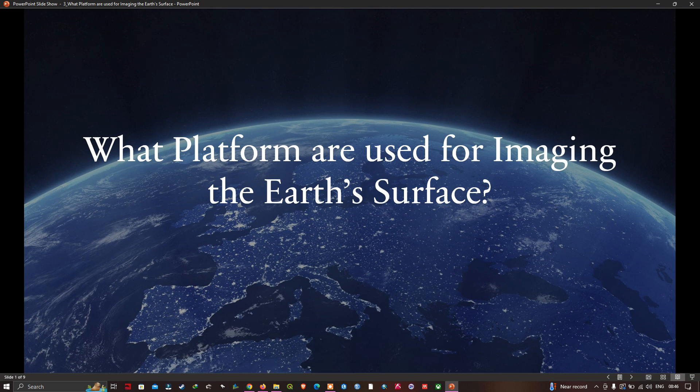Hello everyone, welcome to the channel. In this video we're going to look at what platforms are used for imaging the earth's surface. We want to look at the platforms that are routinely used for gathering remote sensing imagery. Over the past 40 years, the most common platform has been the earth orbiting satellites. Aircraft platforms are often used and more recently imaging from drones has become popular.